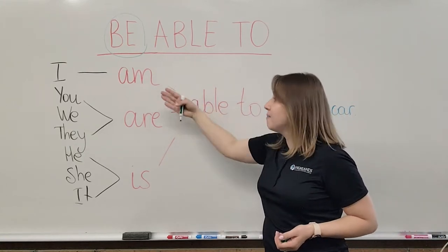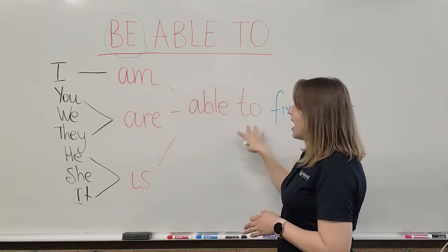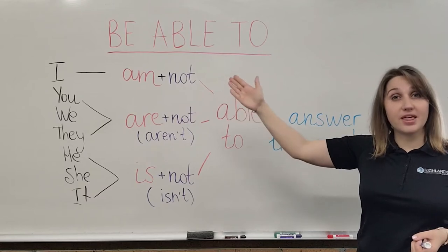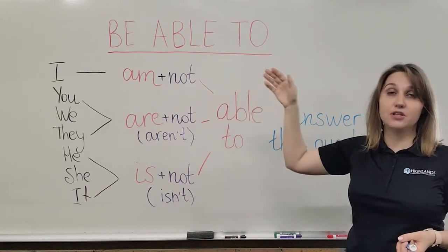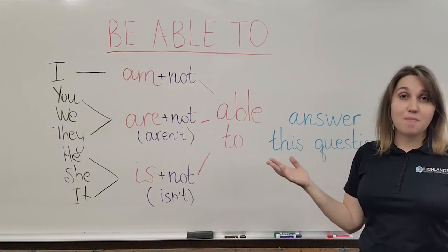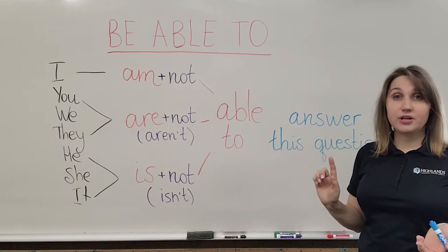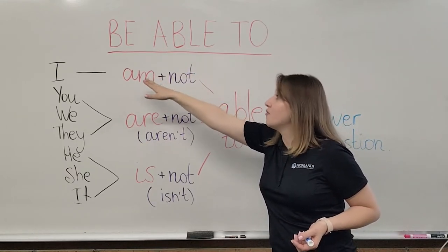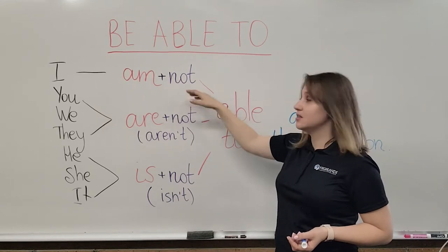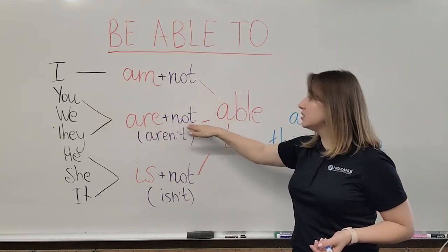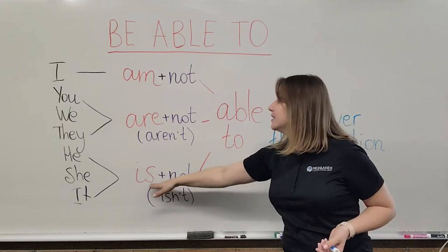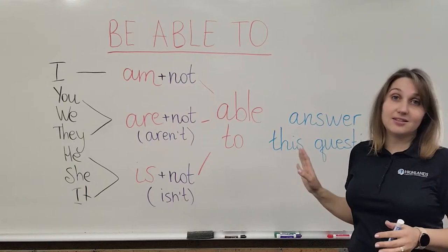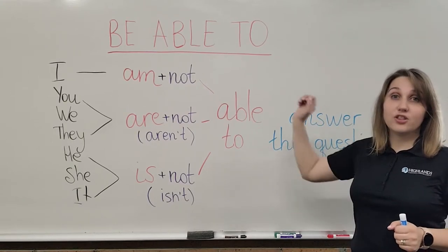Now let's check the formation of the negative form of the modal verb 'be able to.' It basically remains the same. The only difference is that we are adding the negative particle 'not' to the form of 'be': 'am not,' 'are not' or the short form 'aren't,' 'is not' or the short form 'isn't.' All the rest stays the same.